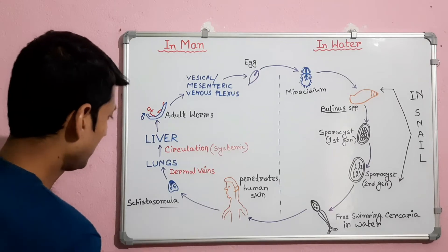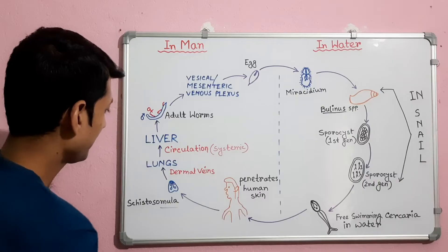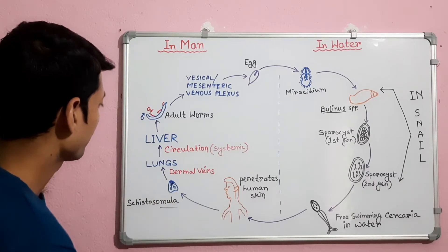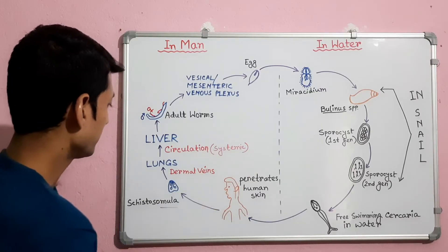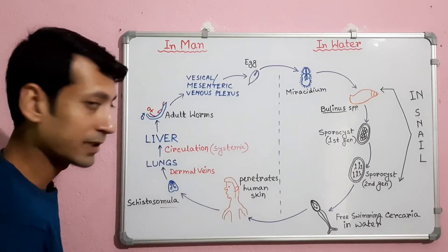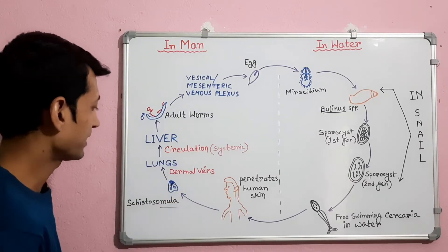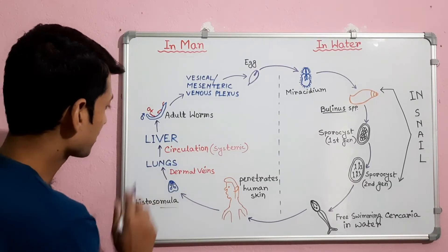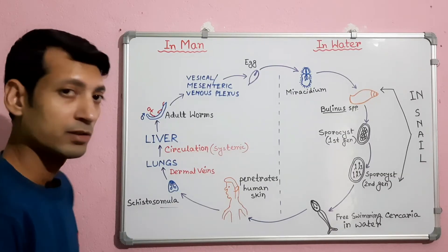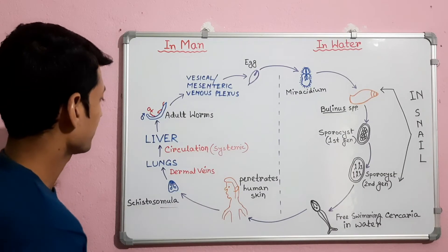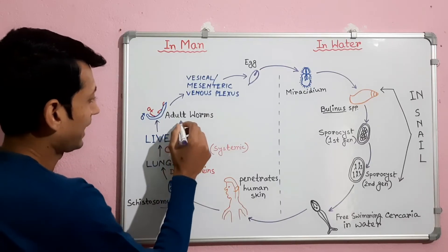The schistosomula enters the dermal veins and reaches the lungs. From the lungs, via systemic circulation, they enter the portal system. In the liver sinusoids, the schistosomula feeds and grows for about 5 to 6 weeks and then becomes adult worms.